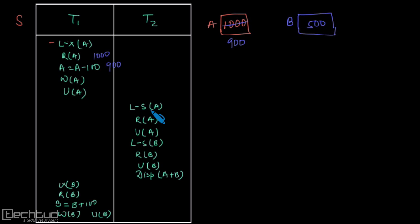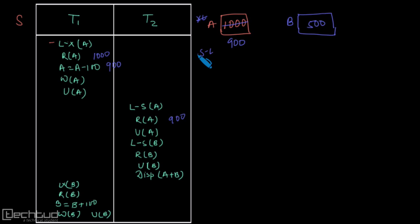Meanwhile, T2 starts execution and performs a shared lock on A. The exclusive lock was already released, so the shared lock is granted. The current value of A is 900, so T2 reads 900 and then unlocks A. It then performs a shared lock on B, reads B which is 500, and unlocks B.